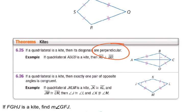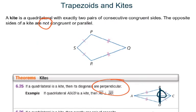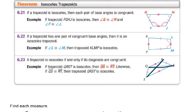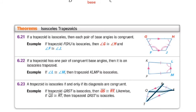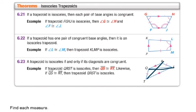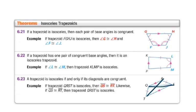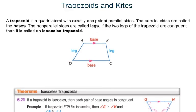Key things to remember about kites: consecutive sides are congruent, the diagonals are perpendicular, and the shorter diagonal gets bisected by the other diagonal — but not vice versa. For trapezoids: if it's isosceles, the two legs are congruent, and the diagonals of an isosceles trapezoid are congruent as well. Good luck!